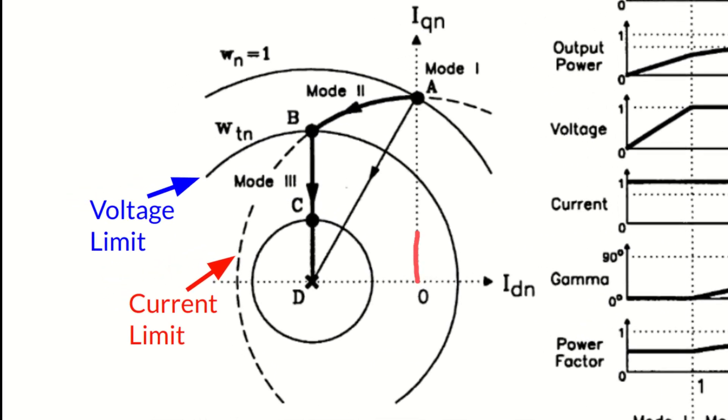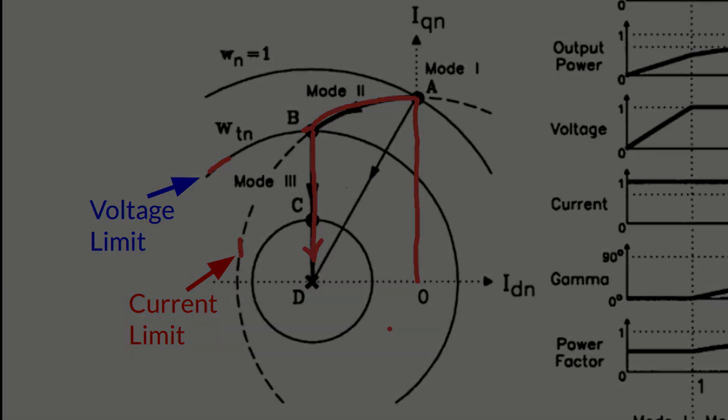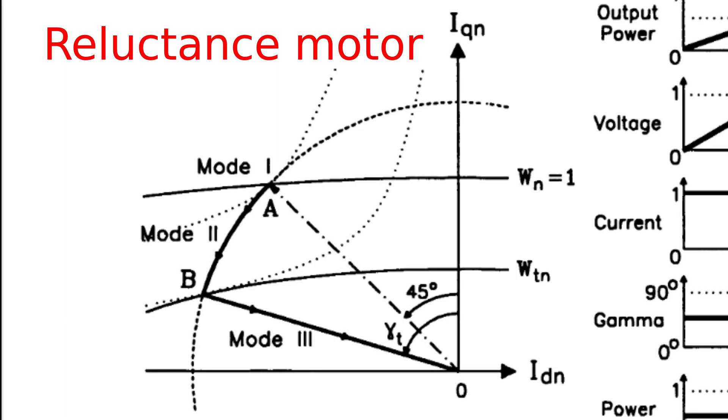We pass initially from MTPA, or maximum torque per ampere, to field weakening, and then once we reach the limit of both the stator current and the supply voltage, we start the MTPV, or maximum torque per voltage method, which requires the lowering of the stator current vector along a specific path to allow for the peak torque at those increasing speeds. And this path depends on the motor type and design.